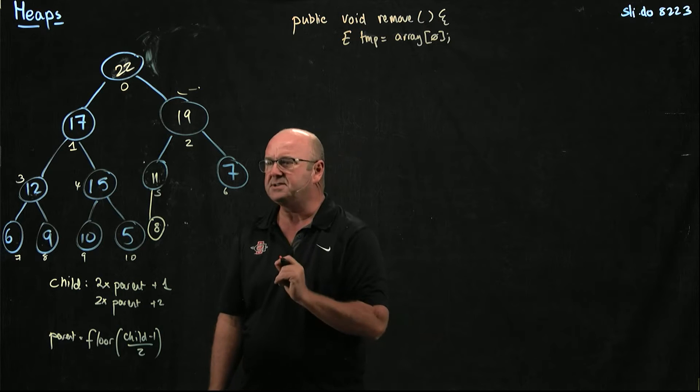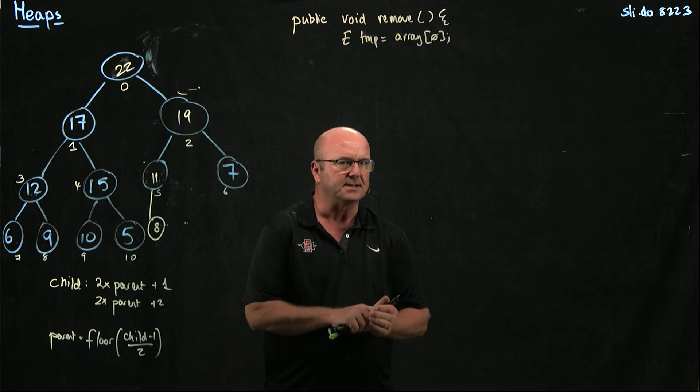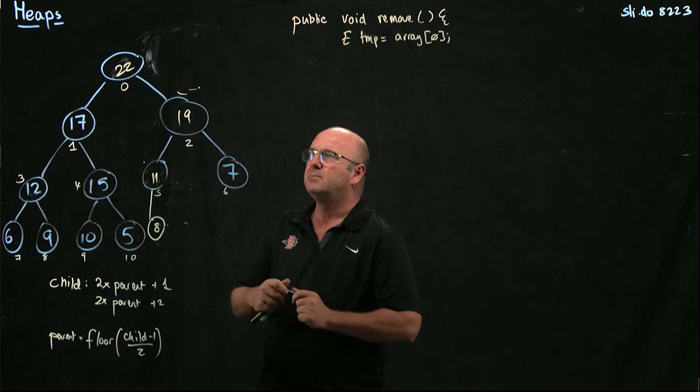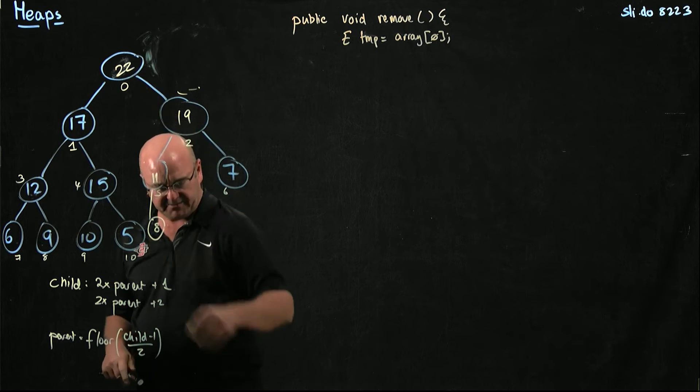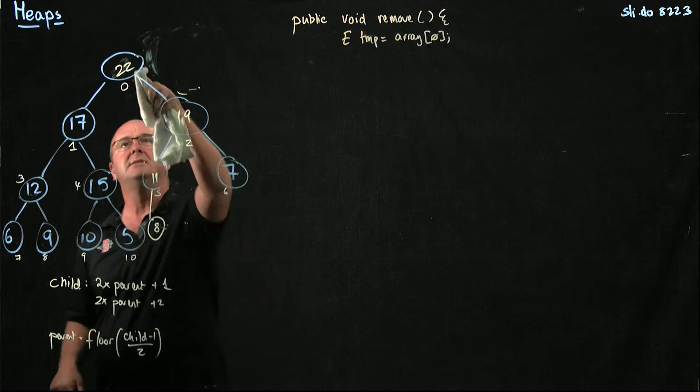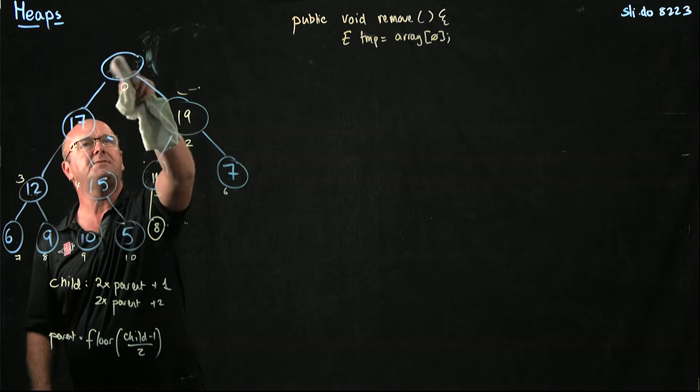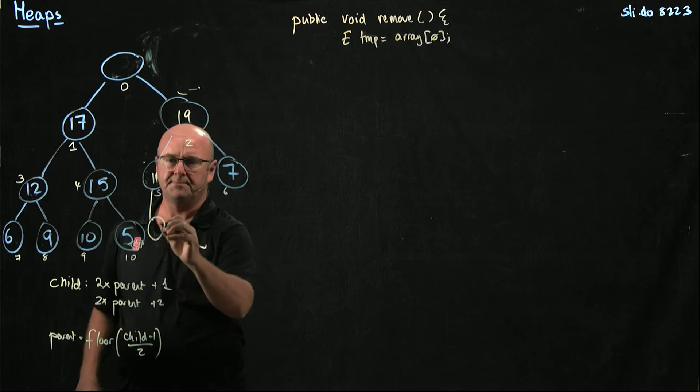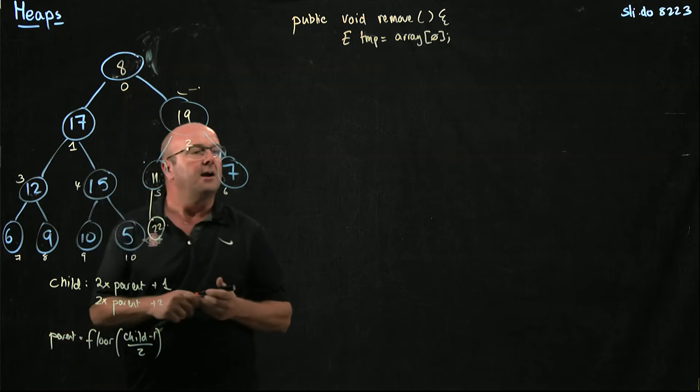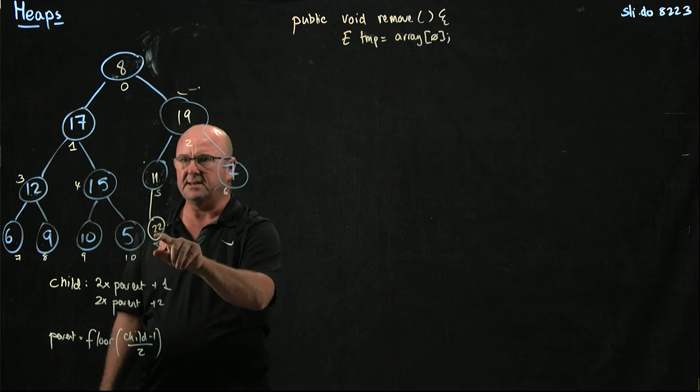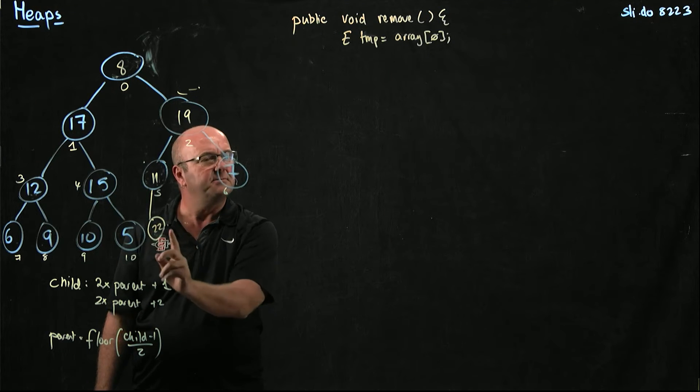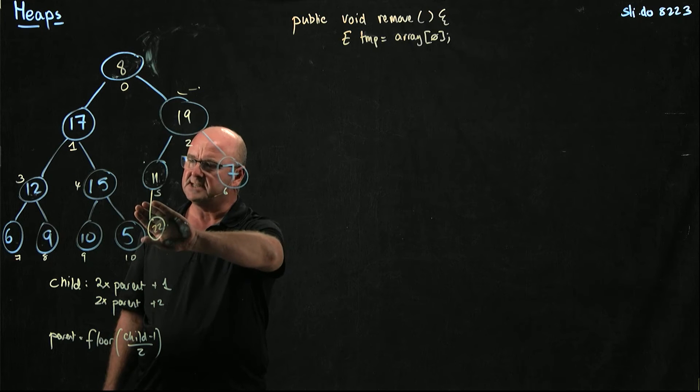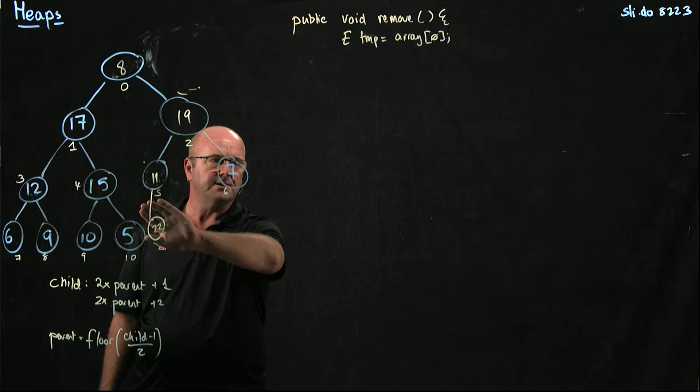Now, what I'm going to do is a little bit of sleight of hand, and I'll explain why in a few minutes. But what I'm going to do when I remove, so if I'm going to remove this 22 here, I'm going to remove the 22, I'm going to swap it in this case with my 8. I'm going to keep that 22 in the array, but I'm going to decrement my last position counter, so that I don't consider that as part of the array.